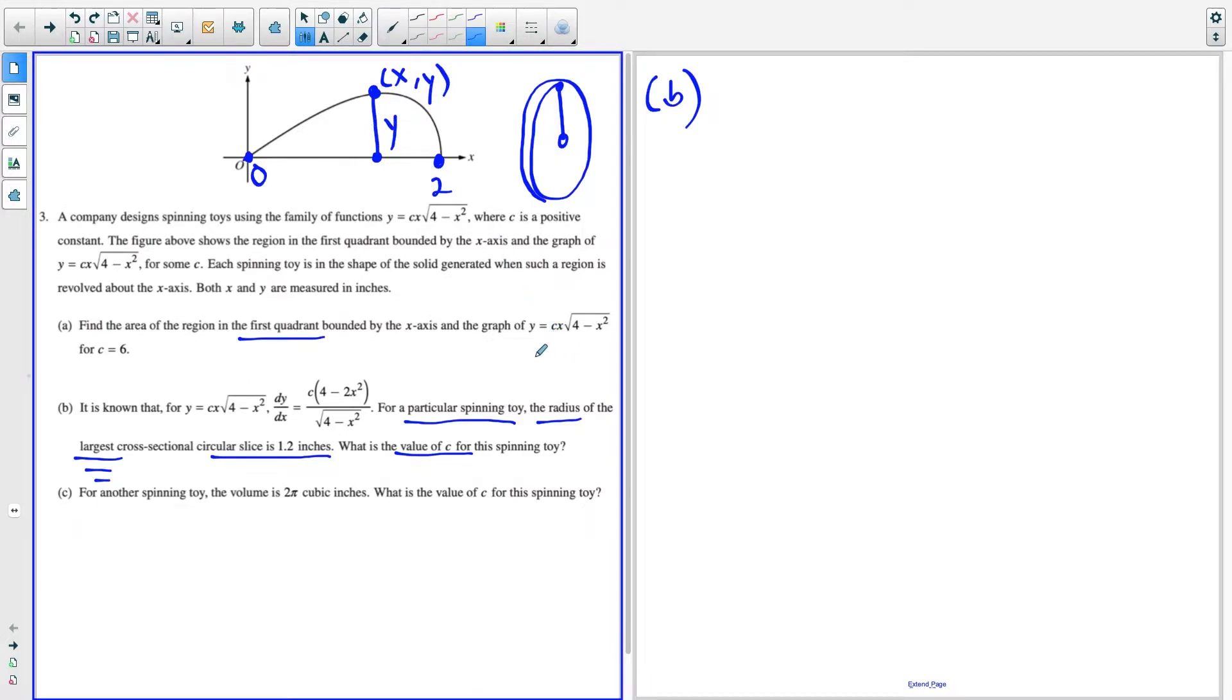Because any point on this curve is x comma y. So that vertical distance is y. So really, what they're telling us is that the y value is maximum, where the maximum y value here is 1.2 inches, and we have to solve for the particular value of C. So there's a lot to digest there.